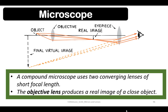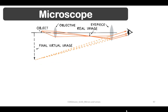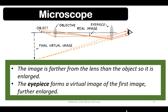The first objective is the scanner, the second is the low power objective, and the third is the high power objective. The image is farther from the lens than the object, so it is enlarged. The eyepiece then forms a virtual image of the first image, further enlarged.